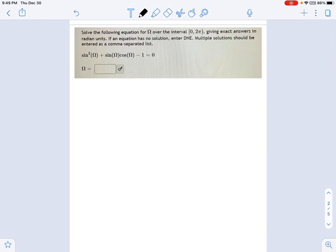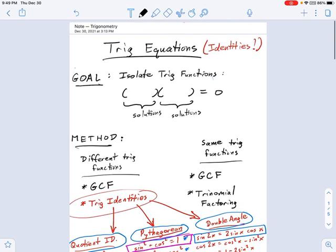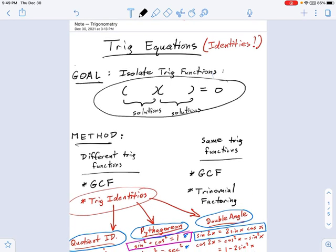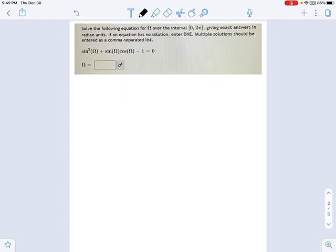You try to get everything on one side equals to zero, that's done already, and then turn it into something that looks like this. Factor times factor equals zero, because in that form, you can pull the solutions out pretty easily. So go ahead and try to factor it.